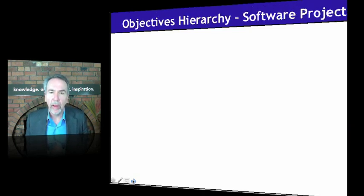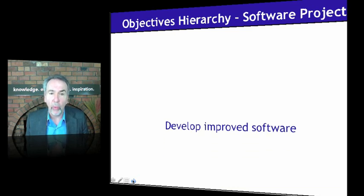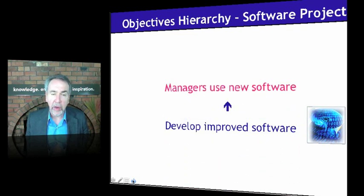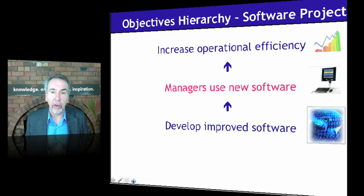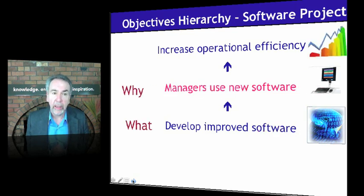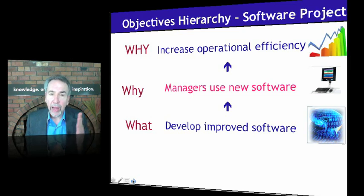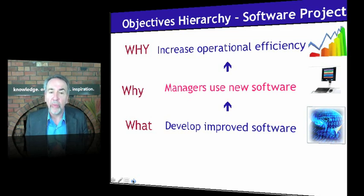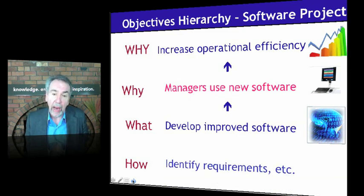Here's another example from an organizational setting concerning software development. The logic might be: if we develop improved software, then managers will use the software. If managers use the software, then we can increase operational efficiency. It's a what, a why, and a big-picture why. The importance of this is that by aligning objectives, we can define what success looks like at each level. If we do that before going on to action steps, we'll be in much better shape. After we have this hierarchy in place, we can identify the action steps — and that's the how.